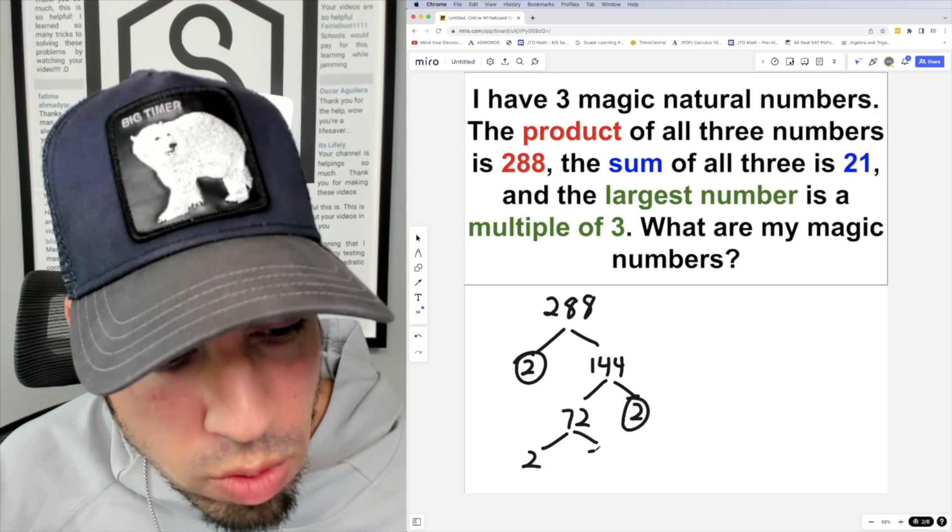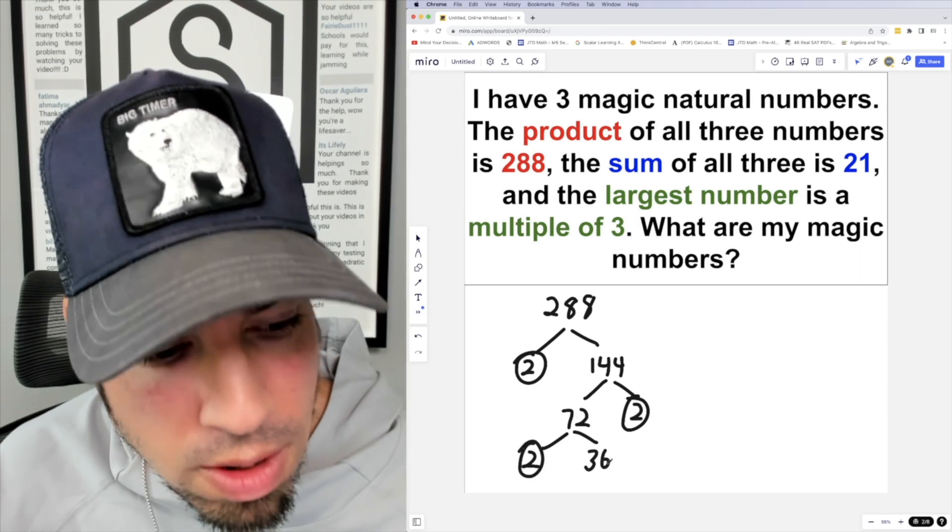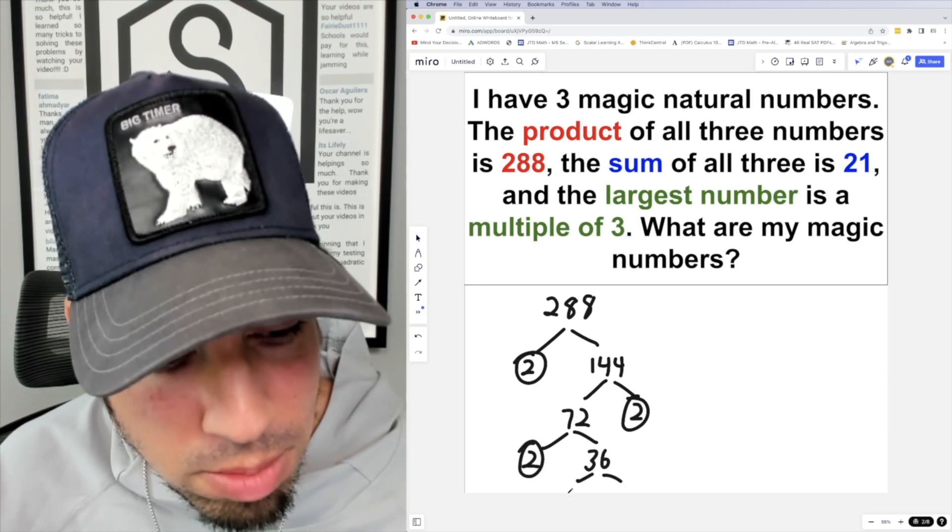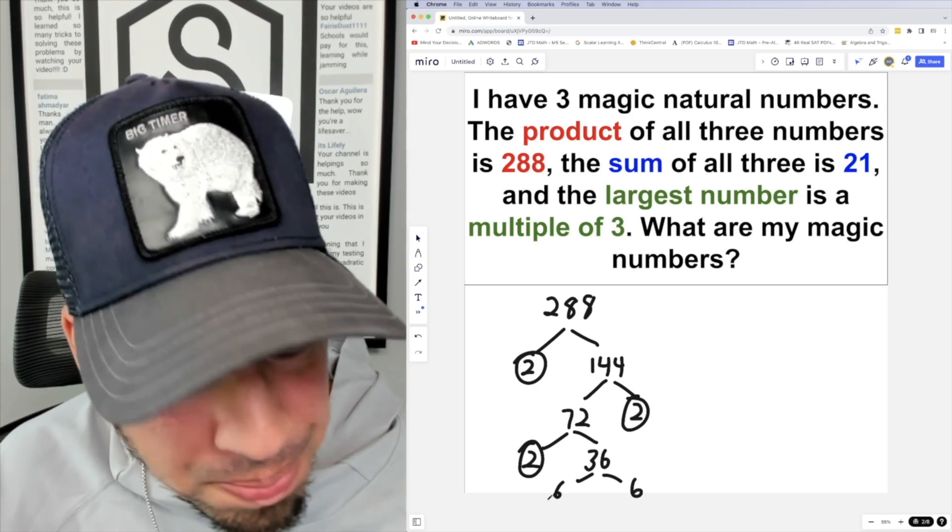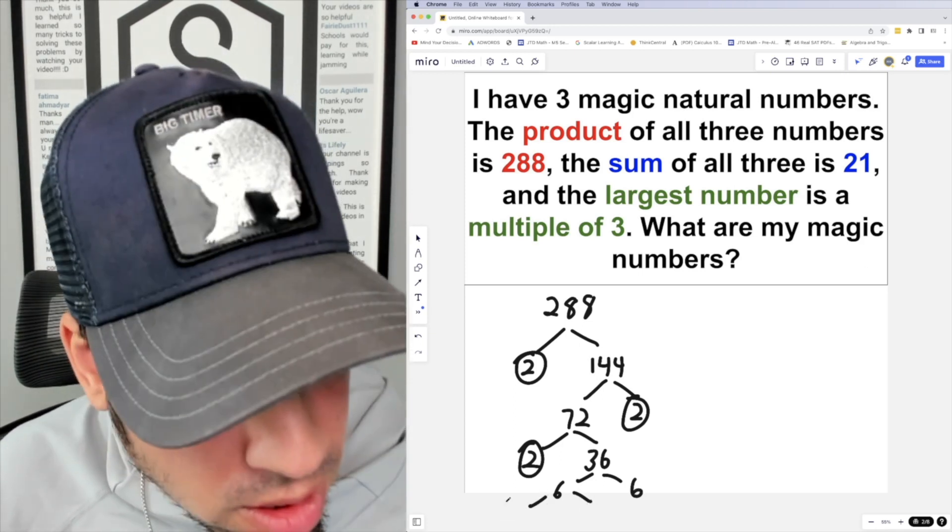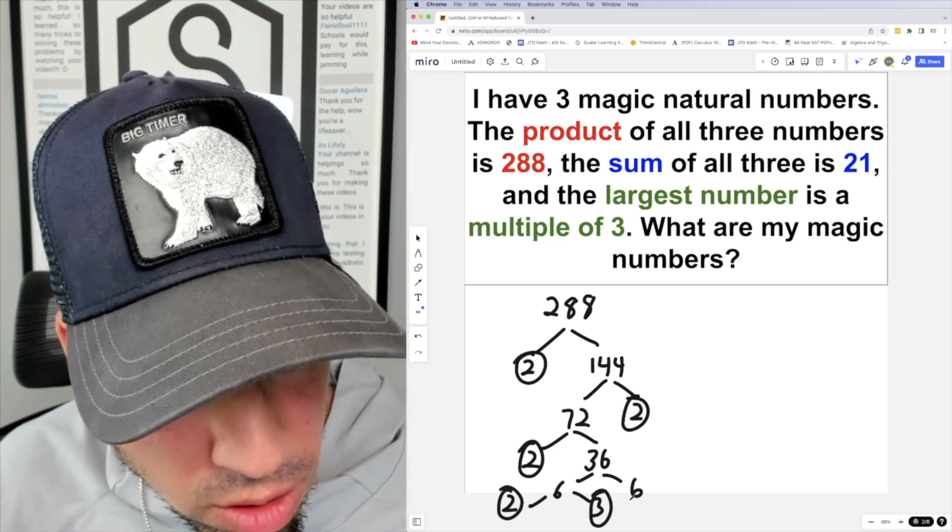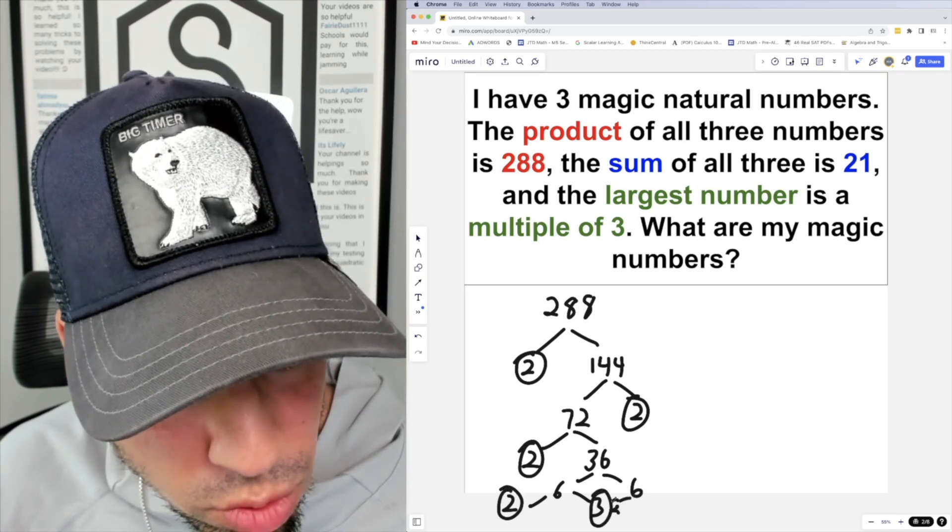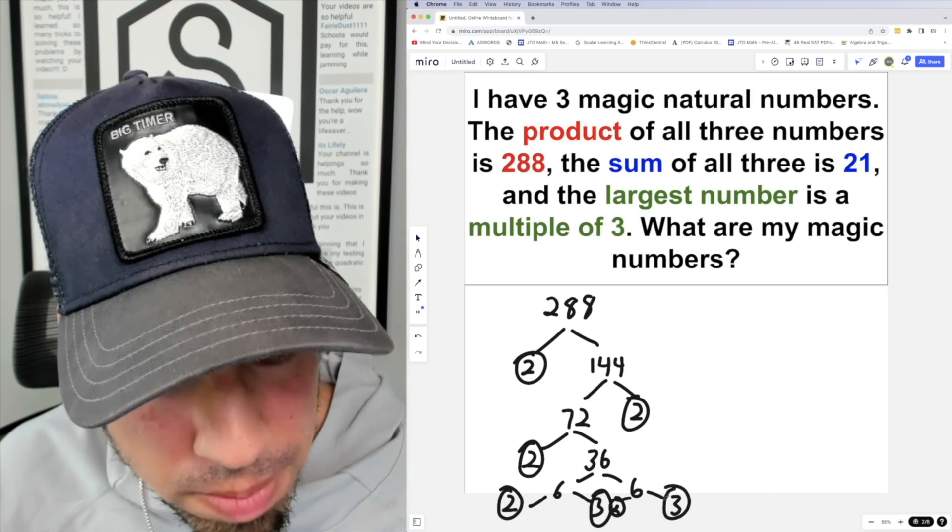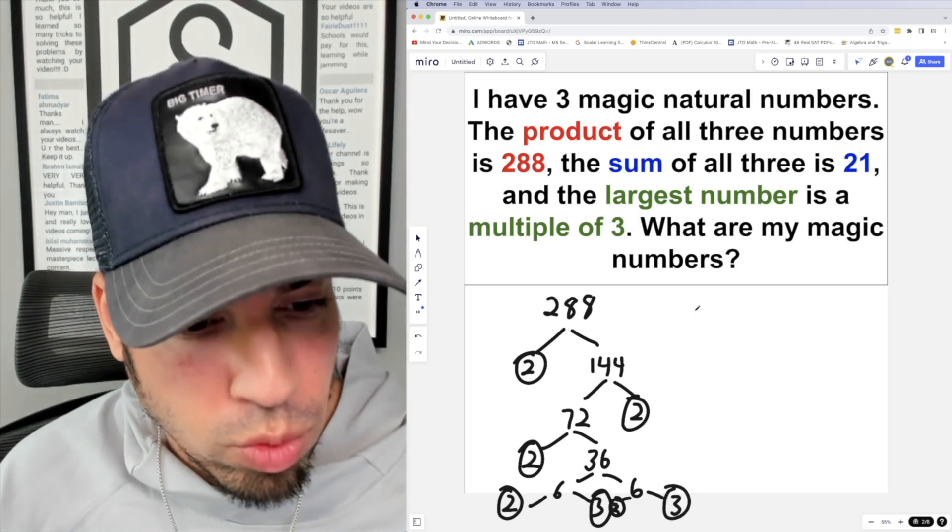We're going to split it again. That can be 2 and 36, so you see we're just kind of making our way down. 36 can be a 6 and a 6, and that can be split like this into 2 and 3, boom boom. And then another 6 can be split into 2 and 3.